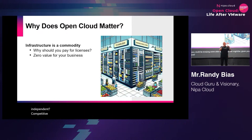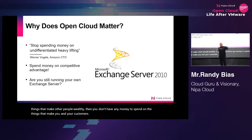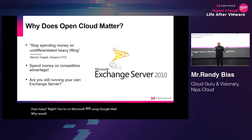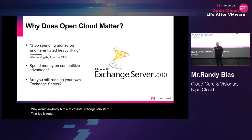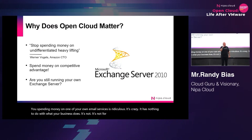Competitive advantage is key. The pie is this big. If you spend all the money on the pie on things that make other people wealthy, then you don't have any money to spend on the things that'll make you and your customers wealthy. Who here is still running their own Exchange server? Nobody? You're on Microsoft 365, you're using Google Mail. Why would anybody hire a Microsoft Exchange administrator? That job is gone; it does not exist anymore. That's because email is a commodity. You spending money on running your own email service is ridiculous — it has nothing to do with what your business does.